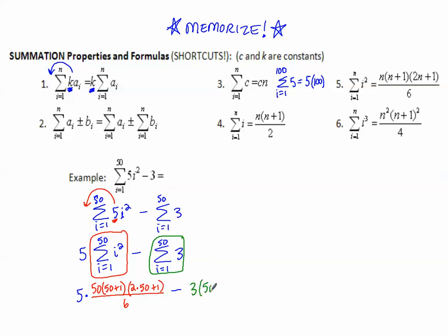Simplify that to clean it up, and if you do, you get 214,475.